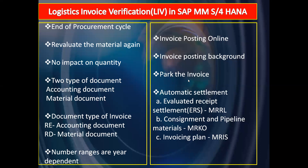Next is parking the invoice. Park the invoice means we are saving the invoice copy using transaction code MIR7. The employee doing invoice verification will just save the invoice document with reference to the purchase order. Another — typically senior — employee will then be responsible for posting that document. So one person saves the document and another person posts it. That is the park the invoice process.